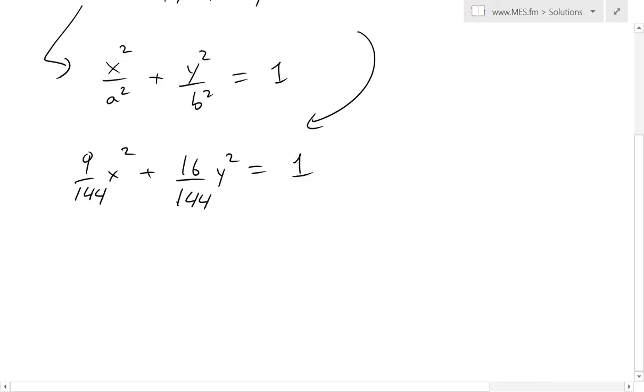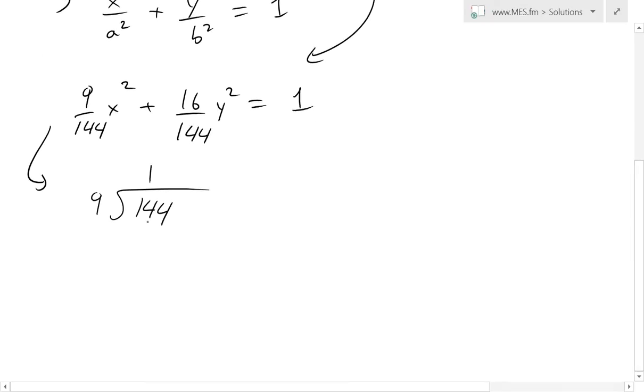And now what we could do right here is first divide 9 divided by 144, and you could use a calculator, or you could do it in your head, or I'll just use long division to do it by hand. Basically 9 goes into 14 once, and 1 times 9 is 9, and then 14 minus 9 is going to be 5, and now we could put this 4 down. So 9 goes into 54, 6 times.